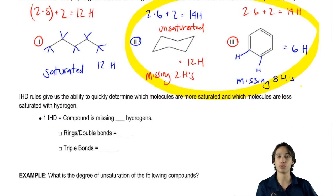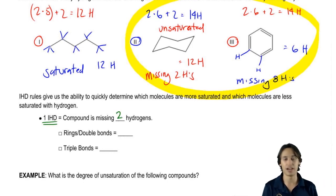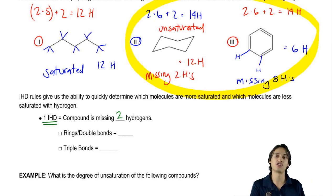What we do is we use the IHD rules to be very explicit about which one is the most unsaturated and which one is the least. The way that we do this is really easy. All we do is say that one IHD is the equivalent of missing two hydrogens. So if you're missing two hydrogens, that would be the equivalent of one index of hydrogen deficiency.